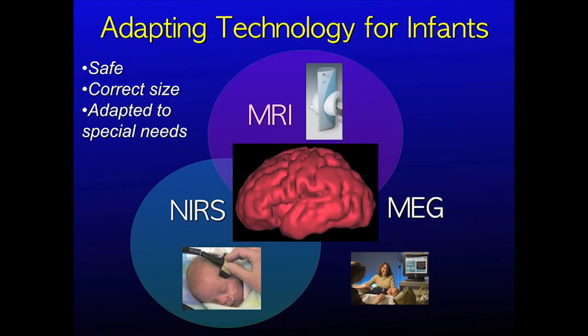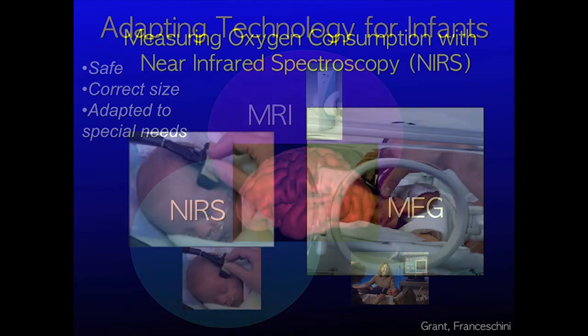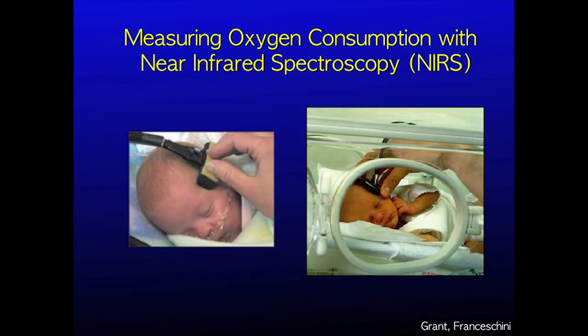The other two modalities we are developing are near infrared spectroscopy and magnetoencephalography. Near infrared spectroscopy is totally safe like ultrasound and can be performed right at the bedside. It provides us with information about cerebral oxygen consumption. Since oxygen is a primary fuel for neurons, this gives us information on regional brain neural activity and neural health.